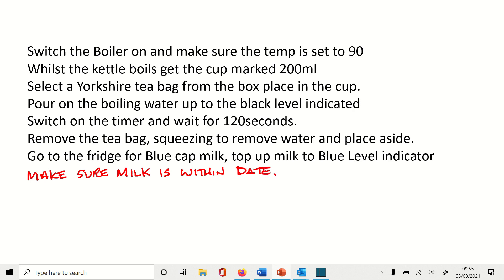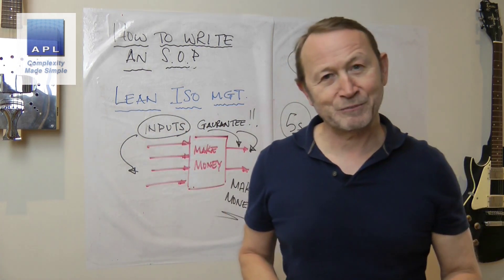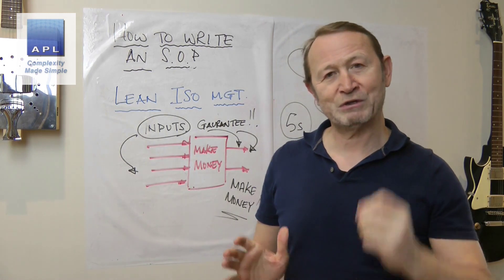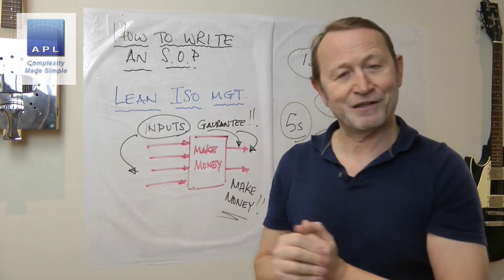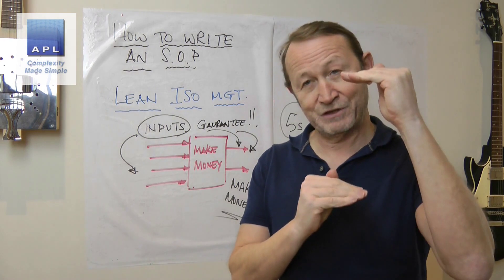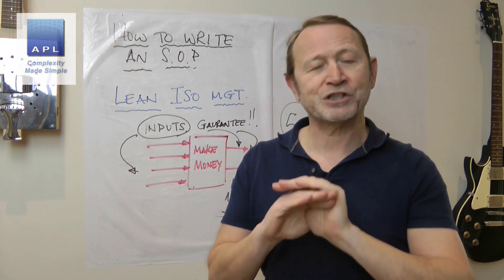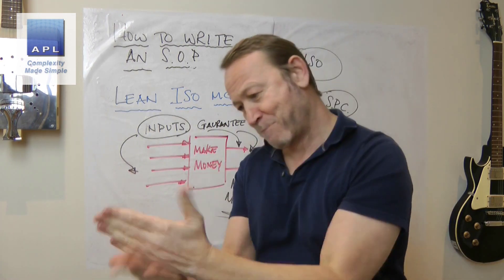Now that's a standard operating procedure. I've identified the things that make money. I've got the process under control. Then I wrote the standard operating procedure to include the things that make money and keep the process under control. The standard operating procedure is no more complicated, but that cup of tea is going to be bang on every single time.